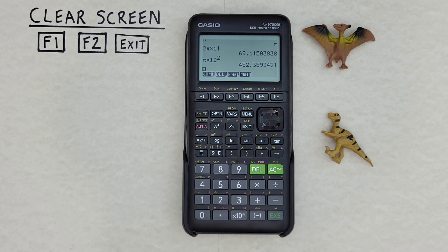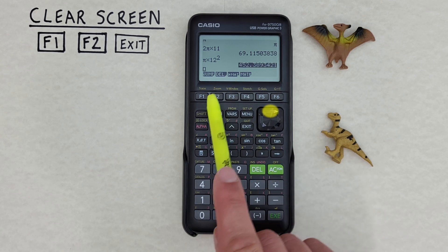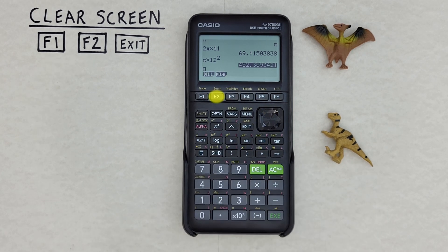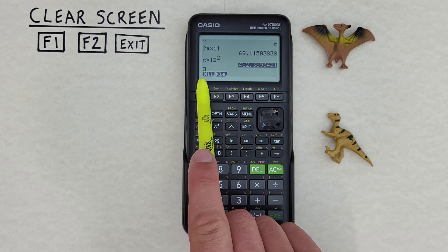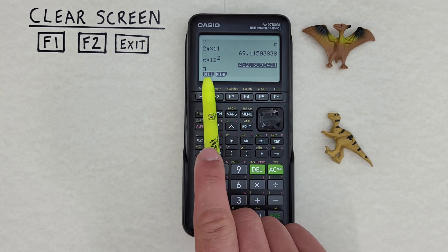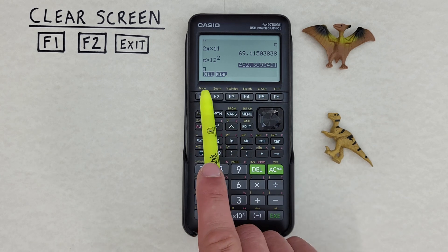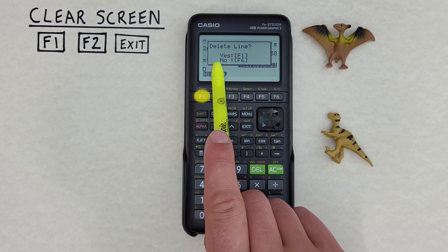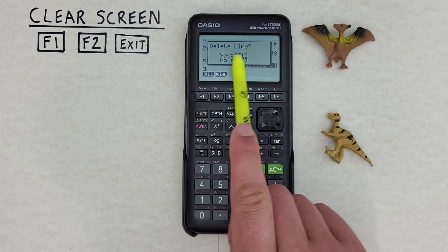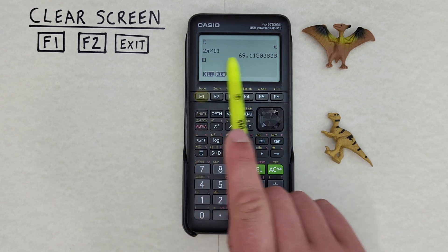Now if we just want to clear one line, we can scroll up to highlight it and then press F2. That gives us the option delete line or delete all. The first one, F1, is delete line. So if we just want to delete one line, we press F1, and we see that line has now been deleted.